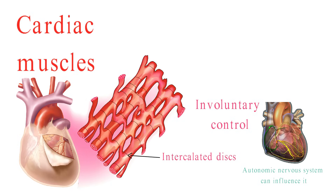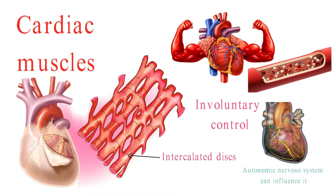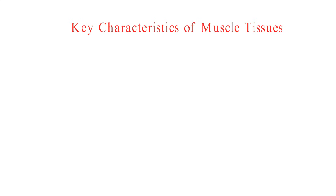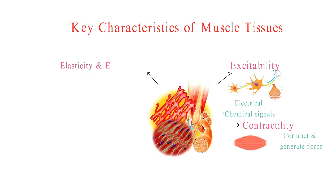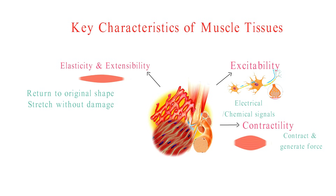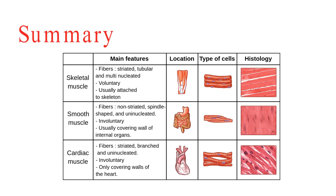The cardiac muscle's primary job is to keep our hearts beating, ensuring blood is pumped throughout our bodies to supply oxygen. Before we wrap up, let's touch on some key characteristics shared by all muscle tissues. Muscles respond to electrical or chemical signals and can contract to generate force. They return to their original shape after contracting and can stretch without damage. Muscle cells are often referred to as muscle fibers. Skeletal muscles work in motor units, controlled by motor neurons. Muscles require a lot of ATP to function. These incredible tissues keep us moving, ensure our organs function, and keep our hearts beating.